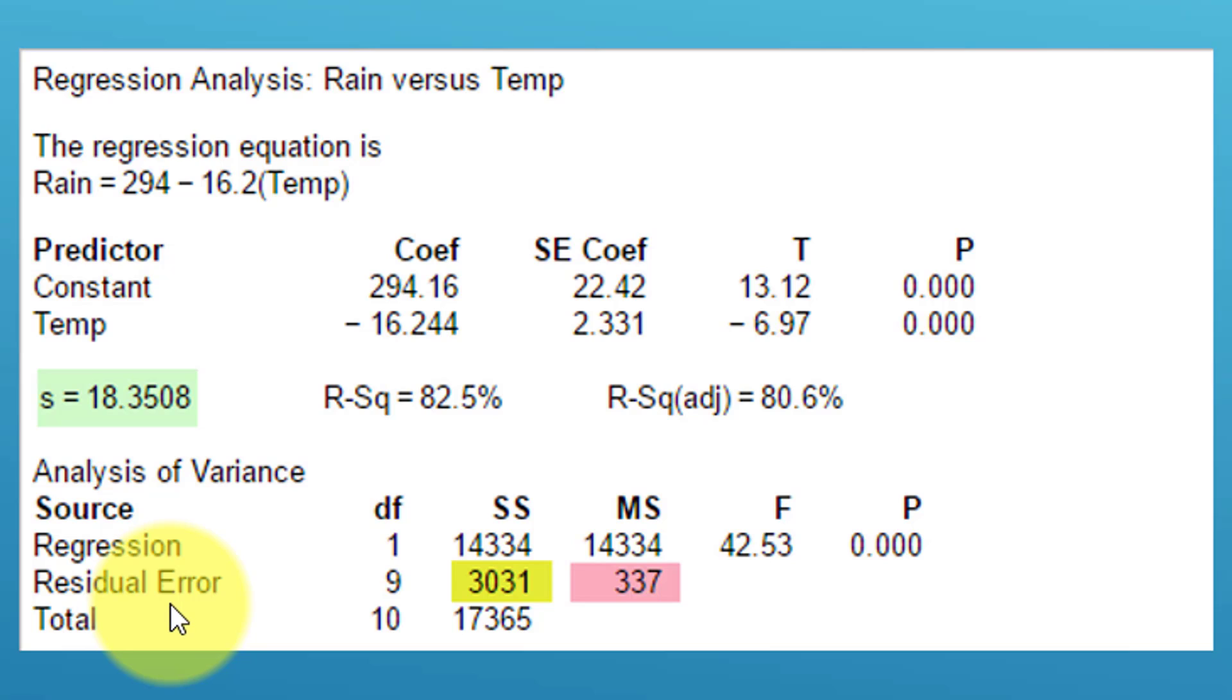In particular, we're interested in the error row. It's labeled residual error there; it may be just residuals or just errors depending upon the printout. We're going to look at the number I have highlighted in yellow here. This is the sum of squares error SSE, which is one of the values they want you to have.